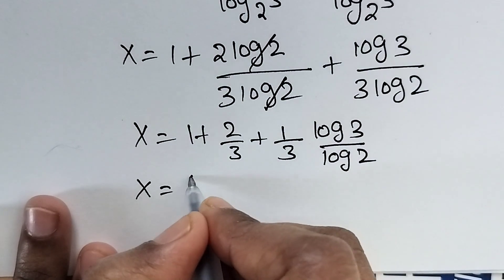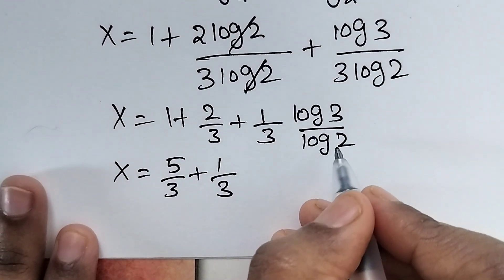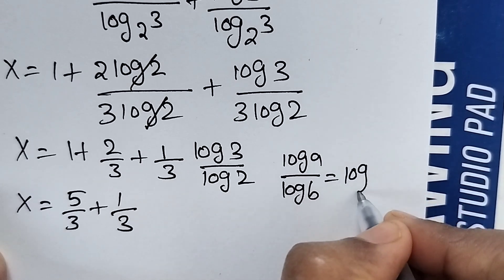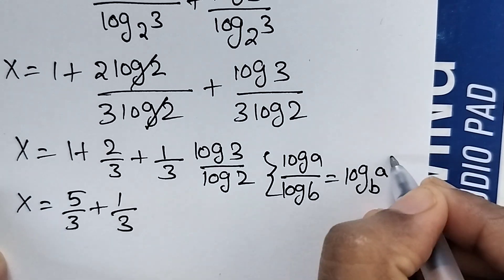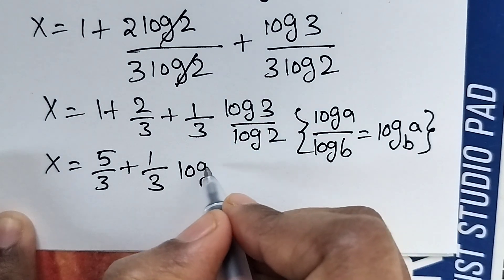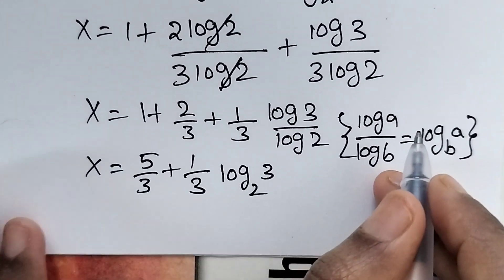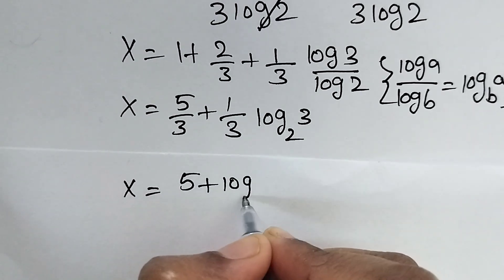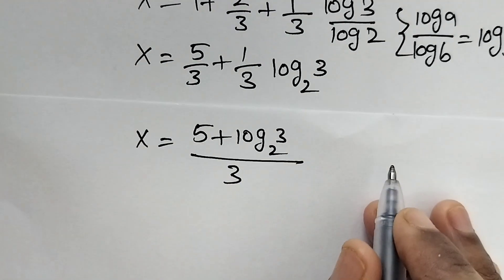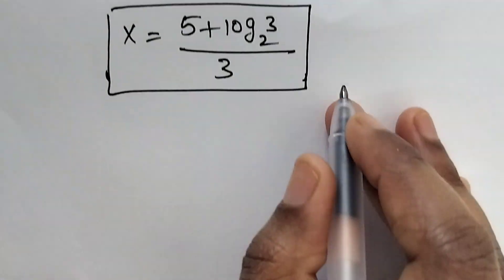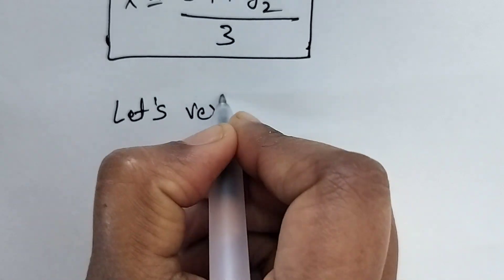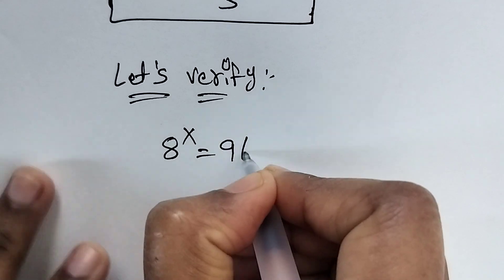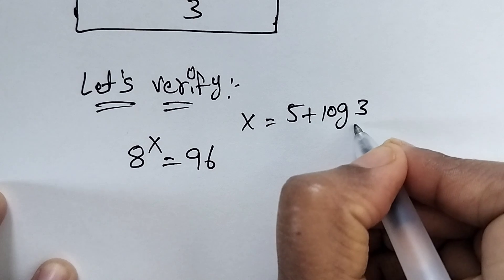So here x is equal to 1 plus 2/3, which is equal to 5/3, plus 1/3 times log 3 over log 2. Now log 3 divided by log 2 is in the form of log a divided by log b, which equals log of a to the base b. So using this formula, we can write log of 3 to the base of 2. Now x is equal to (5 + log₂3) divided by 3. This is the value of x. Now let's verify.